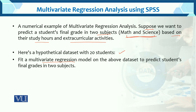Why a multivariate regression model and not a simple regression model? Because here we have two dependent variables. On the above dataset, we want to predict students' final grades in these two subjects — math and science — based on their study hours and extracurricular activities.